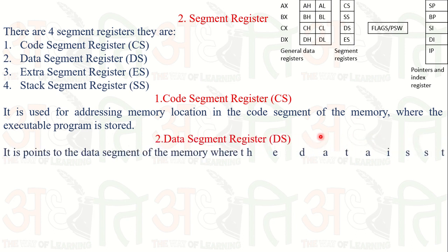The Data Segment register DS points to the data segment of the memory where the data is stored. Simply put, the DS register points to the data segment of the memory.